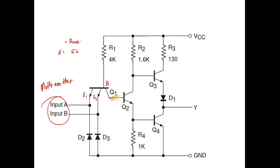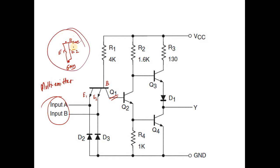E1 and E2 are both connected via D2 and D3 to the terminal ground, so both are connected to the same terminal ground. Since D2 and D3 are identical, we can consider that E1 and E2 have a common point at ground. Both terminals of E1 and E2 are common, which means it is something like a parallel connection. This is how we are going to consider E1 and E2 electrically.